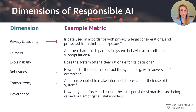The penultimate dimension is transparency, which is all about enabling users to make informed choices about the use of the system. It asks: is it clear when you're interacting with an AI-based system or machine learning model, and do you have the information you need to make a choice about what is going on, how to use it, and how to proceed?